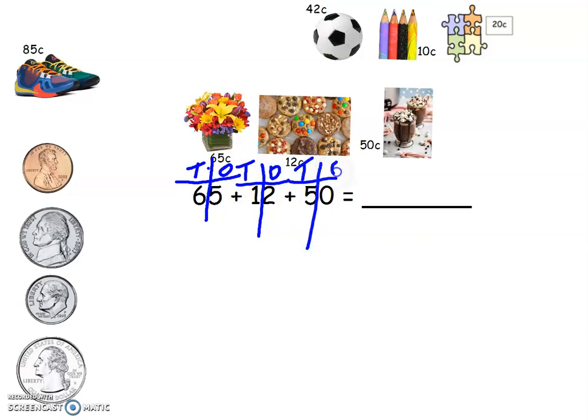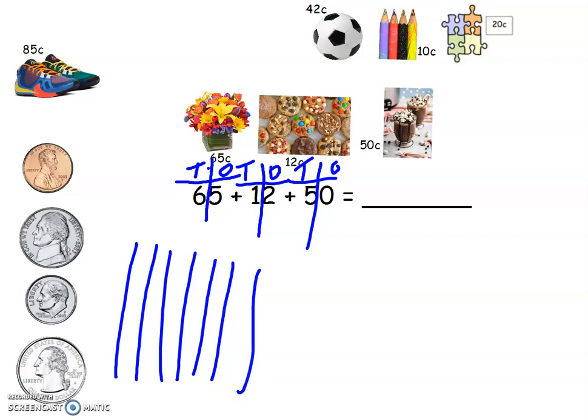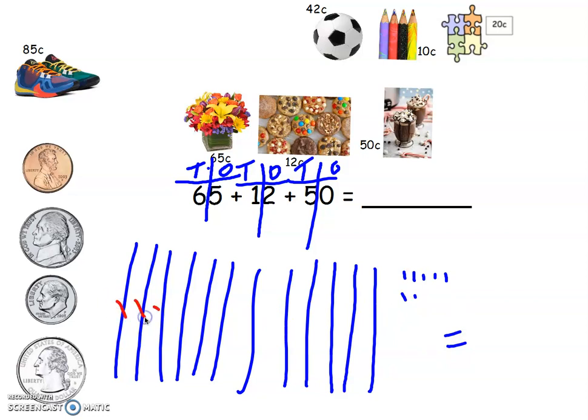I'm gonna add all my tens first here. So I've got six groups of 10: 10, 20, 30, 40, 50, 60, plus another 10: 70, plus five: 80, 90, 100, 110, 120. And then I have my five: one, two, three, four, five, six, seven. So all together, I can help you count it again: 10, 20, 30, 40, 50, 60, 70, 80, 90, 100, 110, 120, and then plus my seven is 127.